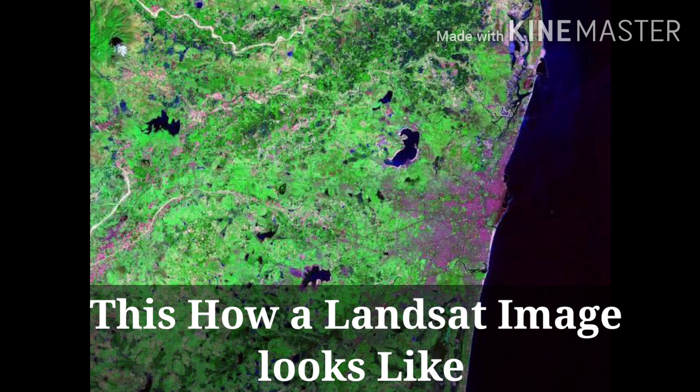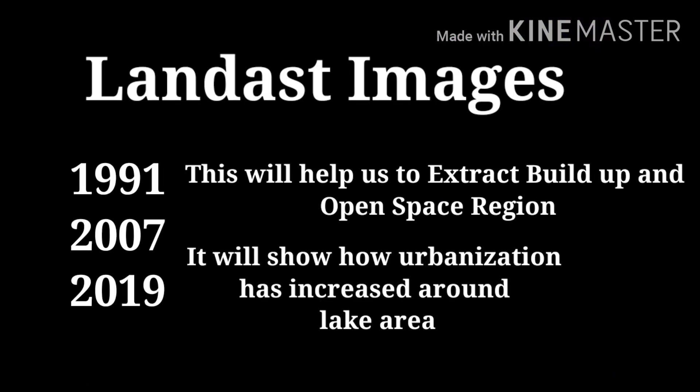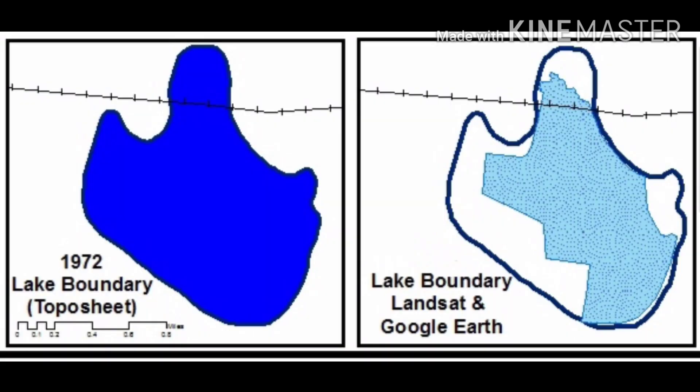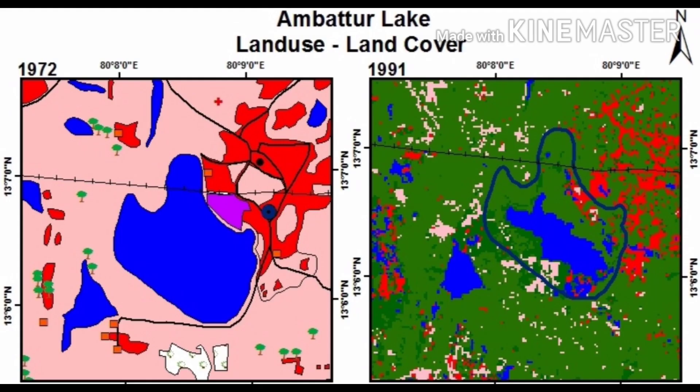Landsat images for 1991, 2007, and 2019 were used for calculating the built-up area near the lake, which will further help in calculating the encroachments over the last 2–3 decades. The lake boundary has been overlaid on the current image, which will clearly explain the facts. In 1972, the total lake area was around 280 hectares. Due to low rainfall, the lake capacity was reduced, as we can see in the 1991 image.